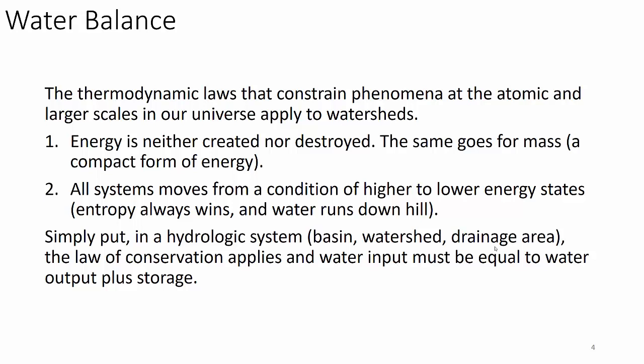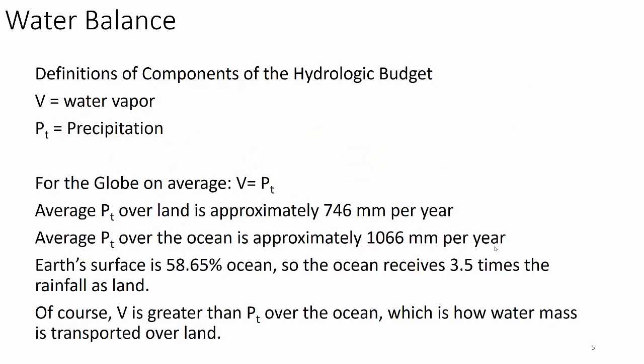Let's give some definitions to these components of the hydrologic budget. V equals water vapor in terms of mass; Pt equals precipitation. For the globe on average, the amount of water volatilizing into the atmosphere as water vapor equals the amount of precipitation on some annual time scheme. The average Pt over land is about 746 millimeters per year. The average precipitation over the ocean is quite a bit larger — 1,066 millimeters per year — since Earth's surface is almost 59% ocean, so the ocean receives three and a half times the rainfall as land.